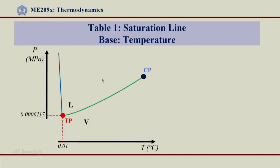Welcome back. Let us now see Table 1, which is the saturation line with temperature as the base. What you see here is a P-T diagram, and as we know, the saturation line starts from the triple point up to the critical point. The triple point is at 0.01 degree centigrade and 0.0006117 MPa.